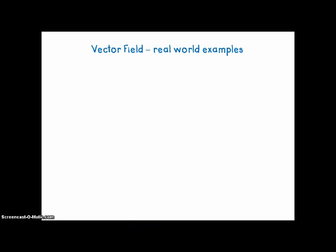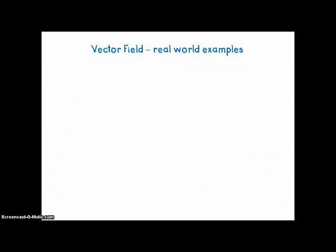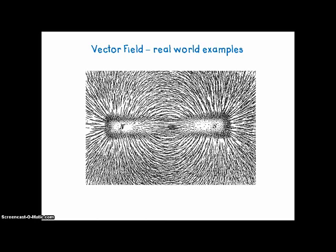Vector field real-world examples. Here's a picture of vector fields that show the wind patterns in the San Francisco Bay on two different days, two different years, and two different times. Of course, this would really be three-dimensional — we're just seeing a two-dimensional image. And then we have magnetic fields that can be represented as little vector fields pointing the way of the attraction of the magnet.